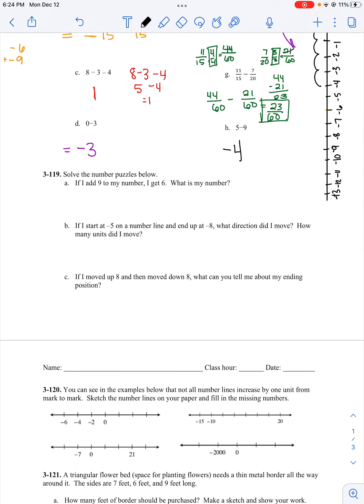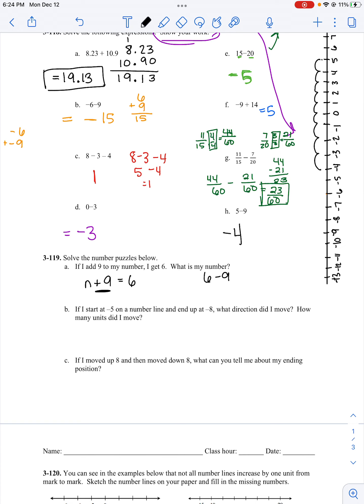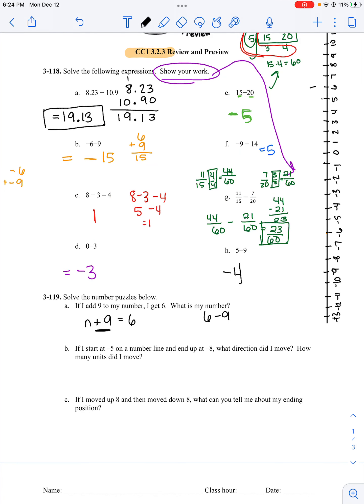Problem 119: Solve the number puzzles below. If I add 9 to my number, I get 6. What is my number? So, I don't know what my number is. But if I add 9 to it, I get 6. I need to think of, well, what's the opposite of adding 9? It's subtracting 9. So, 6 minus 9. I might need to use my number line. 6 minus 9: 1, 2, 3, 4, 5, 6, 7, 8, 9 is negative 3. And I can double check that. Does negative 3 plus 9 give me 6? The answer is yes. So, their number is negative 3.